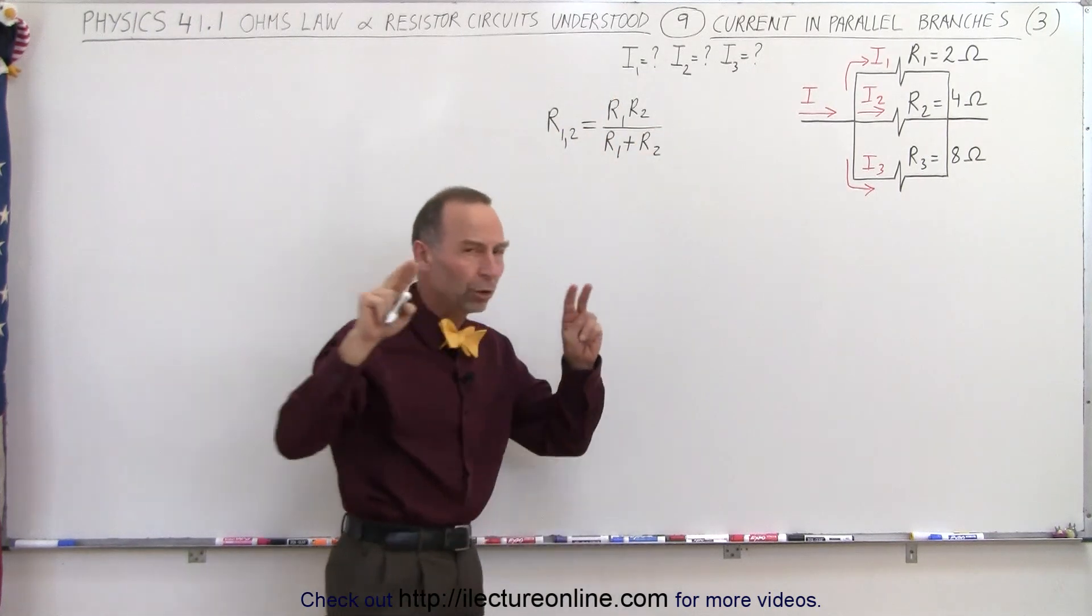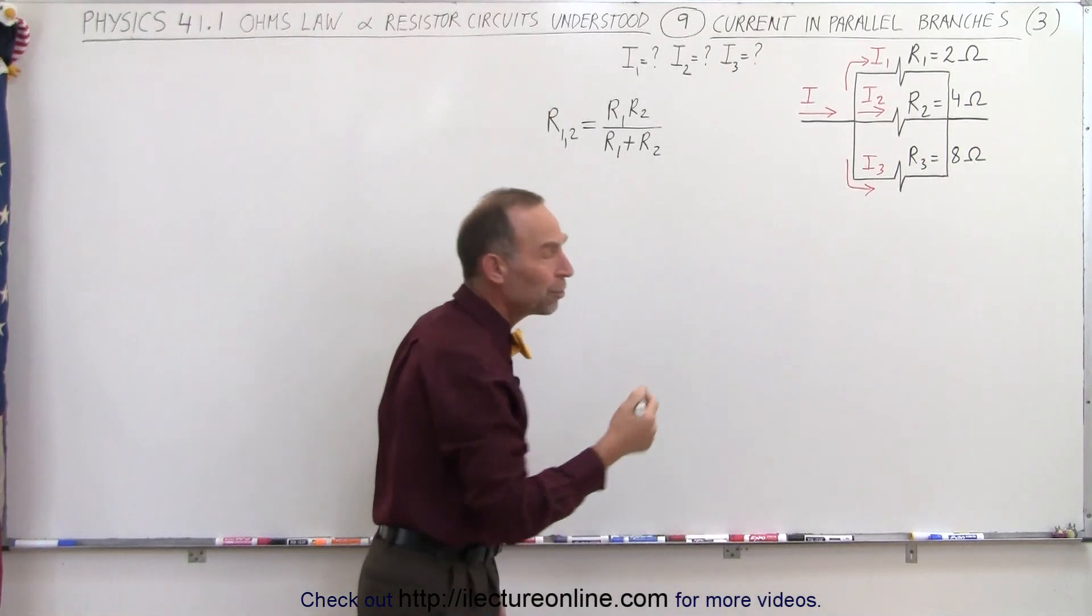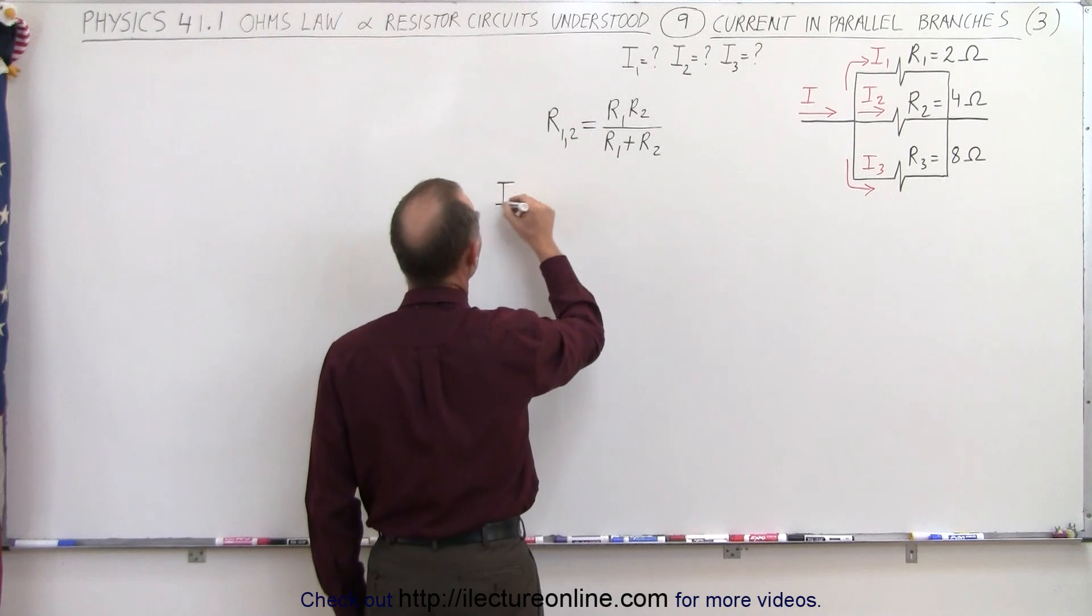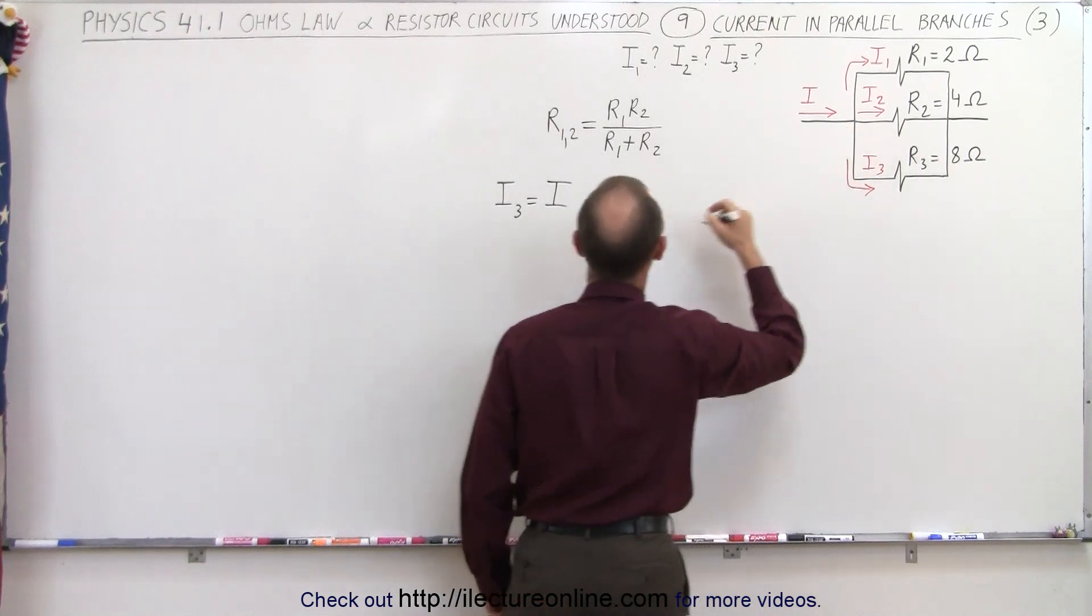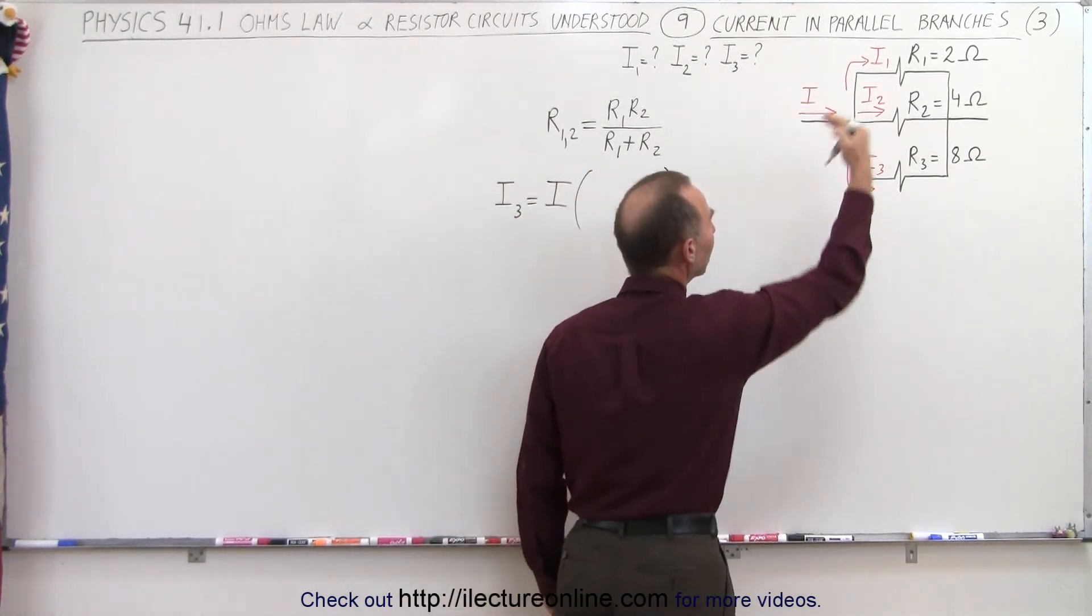So this will now be what we call the other branch to the third branch. Now we use that method where we say that the current I in the third branch is equal to I entering the branch point